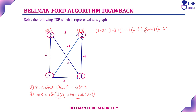First time relaxing the edges: 1 to 2, cost is 3. 1 to 3, distance is 6. 1 to 4, distance is 8. Next, 2 to 3 — already the distance is 3 plus minus 3, which gives 0. Which is minimum, 0 or 6? 0 is minimum, so consider 0. Next, 3 to 4 — it is 0 plus 2, giving 2. And 4 to 2 — it is 2 minus 4, giving minus 2. Minus 2 is minimum compared to 3, so we consider minus 2. We have completed relaxing the edges for the first time.